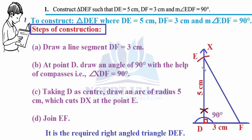Using a ruler, extend the perpendicular to a reasonable height. Then, taking D as center, draw an arc of radius 5 cm — open your compasses to 5 cm using a ruler, place the needle at D, and intersect the perpendicular line. This gives DE equals 5 cm. Compasses are used to avoid the observation errors that occur with a ruler alone. Join EF to complete the triangle.